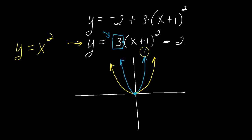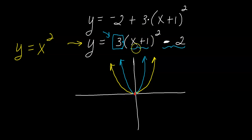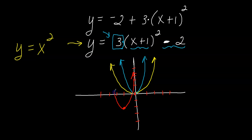Then I look at x plus one — that causes the graph to move left one. The minus two causes the graph to move down two. So I take the vertex and move it left one and down two. My final graph in red shows the skinnier parabola shifted to that new vertex position. These are just sketches — not exact — and in a later video I'll show you how to make more exact graphs.